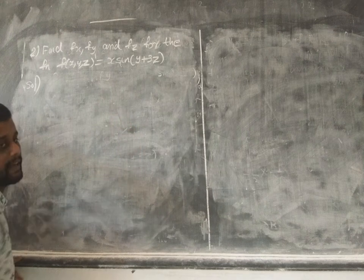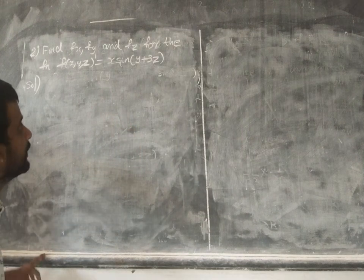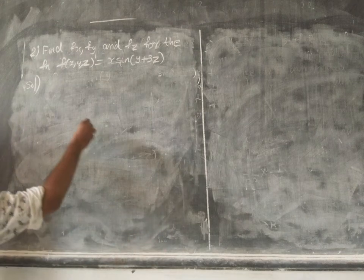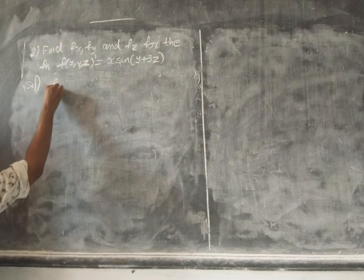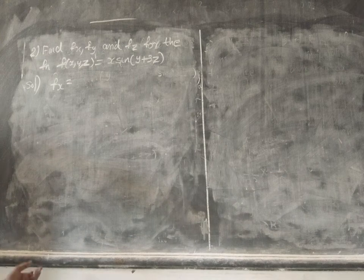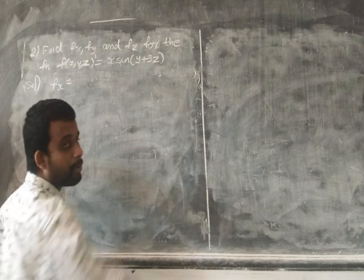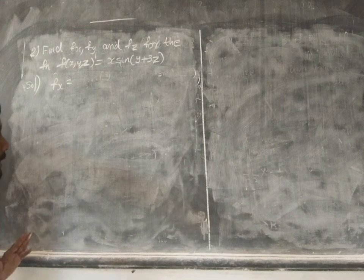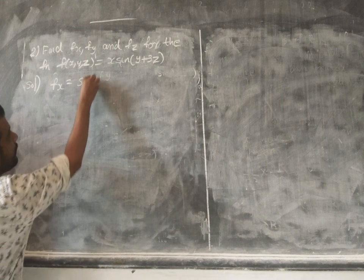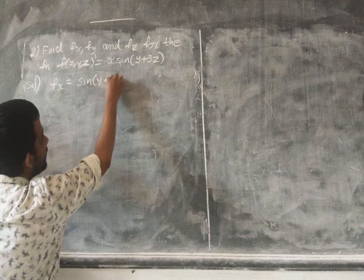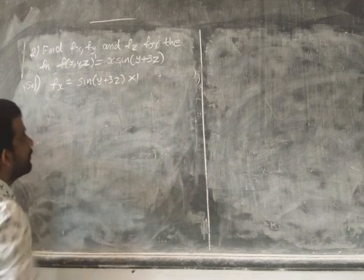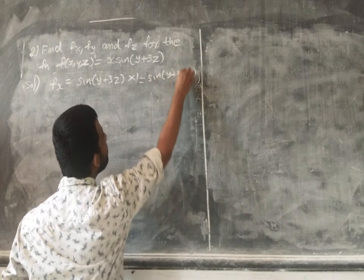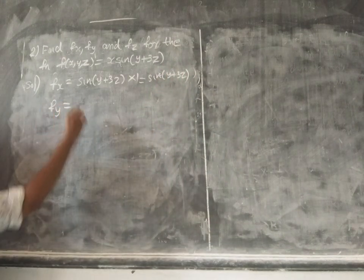Next, find f_x, f_y, and f_z for the function f(x, y, z) = x·sin(y + 3z). For f_x: the partial derivative of f with respect to x, holding y and z constant. Since sin(y + 3z) is constant with respect to x, f_x = sin(y + 3z).